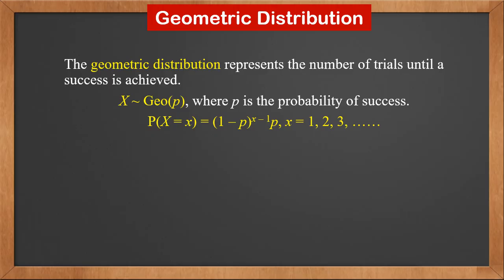P(X = x) is the probability that success is achieved at the xth time, so the first x minus 1 times are all failures. Therefore, the probability is (1 minus p) to the power x minus 1, times p.